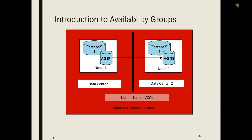Always On Availability Groups provide database-level protection across multiple data centers. Databases can be put into a group so applications requiring multiple databases can treat them as one unit and fail them over together. You can have a single listener name just like with an FCI — the same name and IP, or with multiple subnets, different IPs but the same name — to connect regardless of which replica is primary. Availability groups sit inside a Windows Failover Cluster service.